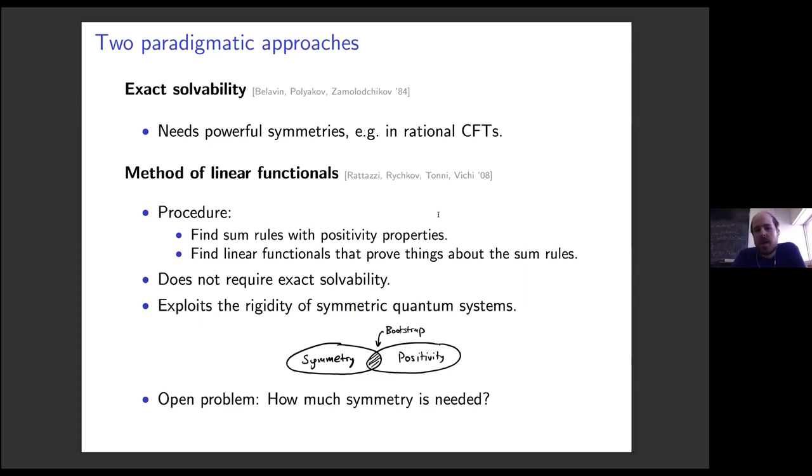After the work by BPZ in the 80s, it was generally thought that you needed an infinite-dimensional symmetry group, a very powerful symmetry group to make progress. One of the lessons over the last decade is that sometimes you can get away with a lot less, and really symmetry and positivity play together in surprising ways.